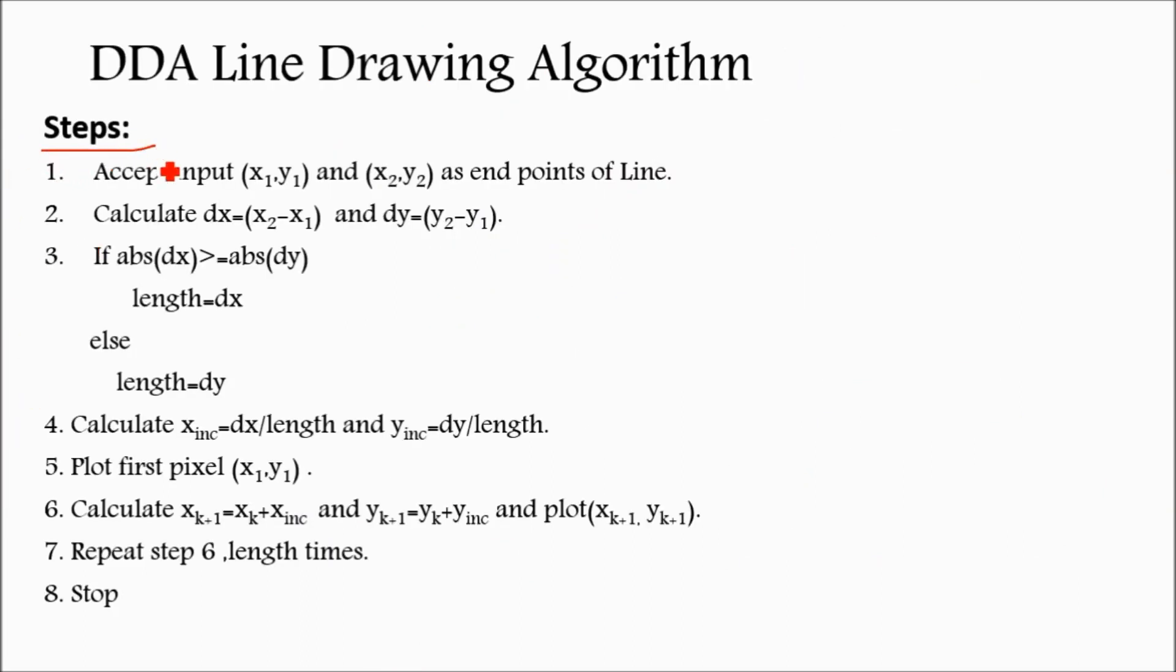Those are the steps for DDA algorithm. Initially, you have to accept inputs x1, y1, x2, y2 as the end points of line. Then calculate dx, that is the difference between x2 and x1, and dy as y2 minus y1. Then find out whether x spread is more or y spread is more by having the absolute value. Length will become dx if absolute dx is greater, or dy if dy is greater. Now calculate x increment. For example, if absolute dx is greater than dy, length will become dx. This dx, x increment is dx upon length, dx upon dx equals 1, and y increment is dy upon dx which equals m.